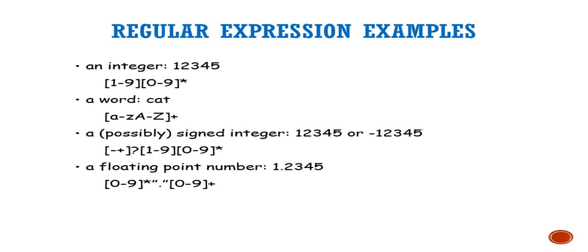For a floating point number, there must always be a dot. In the regular expression, the dot is written inside double quotes to match it literally. Before the dot, any combination of digits (zero or more, [0-9]*) may appear, and after the dot at least one digit is required, so [0-9]+ follows.